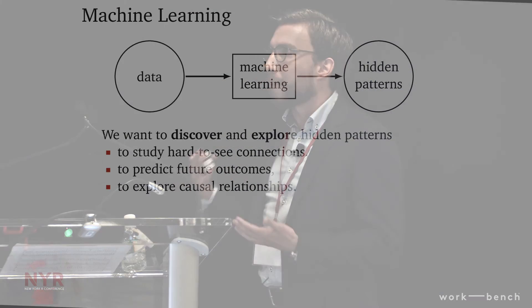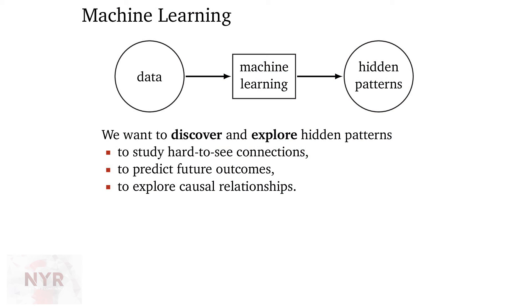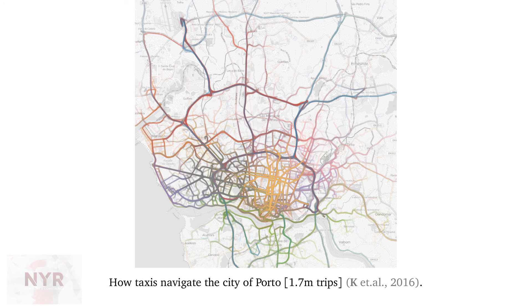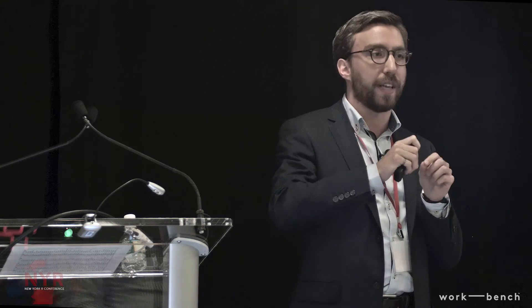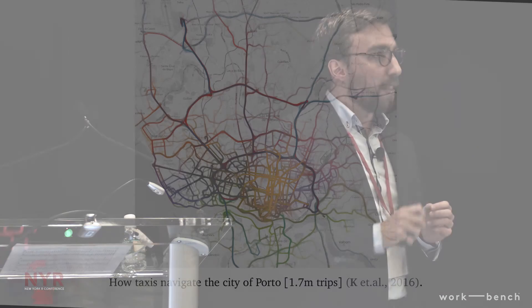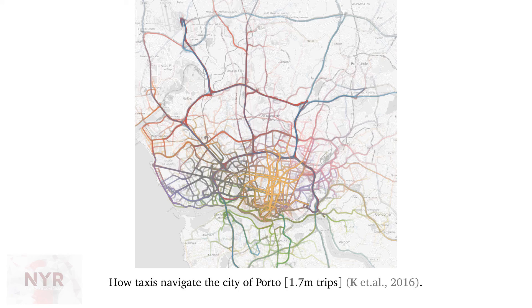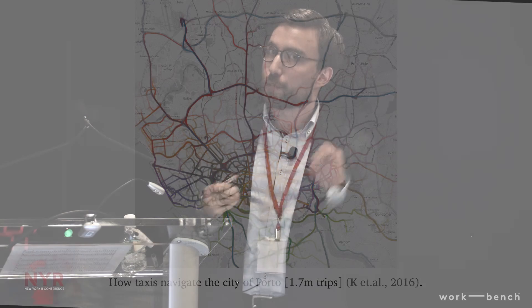So what is machine learning? It's a form of data analysis where we want to discover and explore hidden patterns in data. The idea is that we want to study hard-to-see connections, predict future outcomes, and maybe explore causal relationships, among other goals. Here's an example: a data set of taxi rides taken over 2014 in the city of Porto. This is actual GPS information taken at every 15 seconds, so we have trajectories. We're interested in seeing how people navigate the city by car — 1.7 million trips clustered into groups that take a similar path through the city and a similar amount of time to get from source to destination.